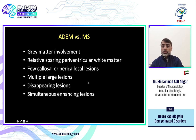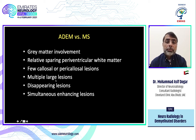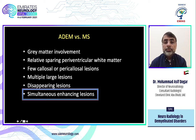ADEM versus MS: ADEM can involve more gray matter, can spare the periventricular region, corpus callosum, and pericalosal area. Lesions are multiple and large, and they enhance simultaneously — more specific for ADEM compared to MS.